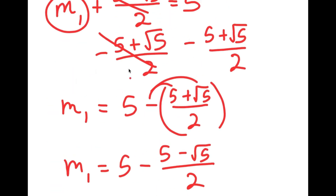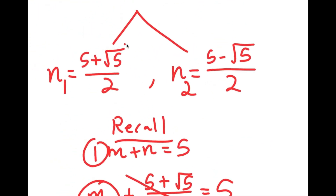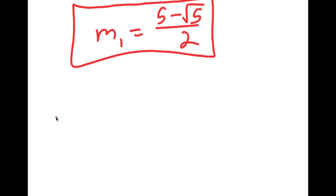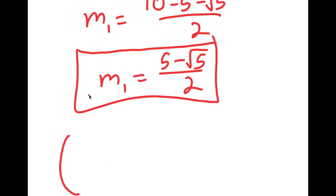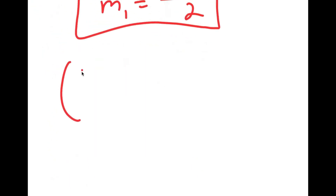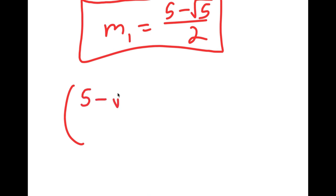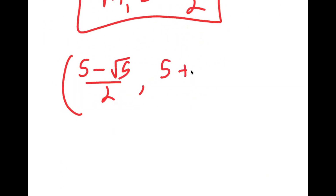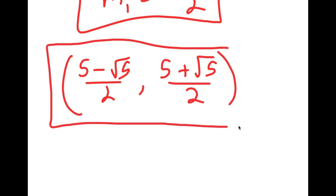Since n1 is equal to 5 plus the square root of 5 over 2, my first solution for the system of equations is the ordered pair: 5 minus the square root of 5 over 2, comma, 5 plus the square root of 5 over 2.